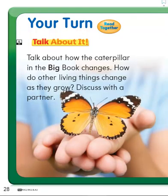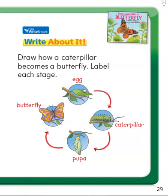As we read this week, we're going to talk about how the caterpillar in the big book changes. Our focus question to be thinking about is: how do other living things change as they grow? We're going to discuss this throughout the week. Here's a write-about-it activity for you to do if you choose: draw how a caterpillar becomes a butterfly and label each stage.